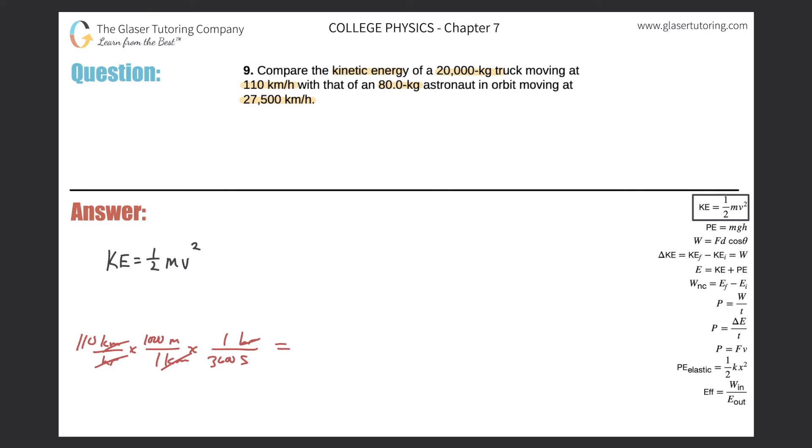Alright, and we just simply do our conversion now. So 110 times 1,000 divided by 3,600. And it works out to about 30.6. So this is about 30.6 meters per second. Great, so that's the velocity.